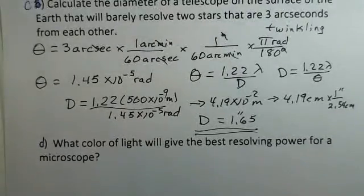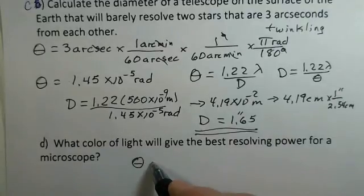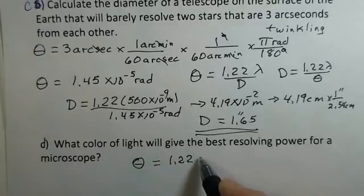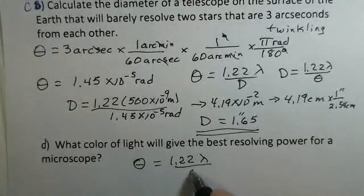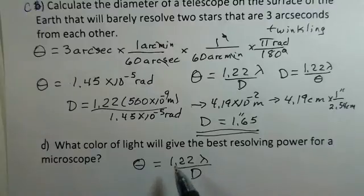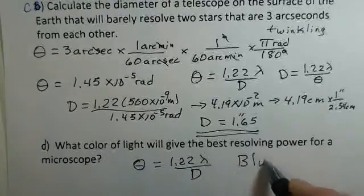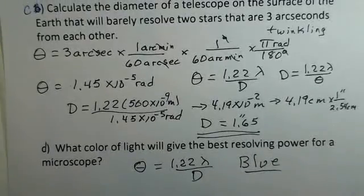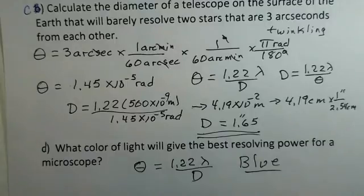Last question here. What color of light will give the best resolving power for a microscope? We want to get the smallest theta that we can in order to resolve small details. We have a fixed diameter for the microscope. What wavelength of light should we use? If we want a small theta, we need to use a small wavelength. That would be the blue end of the spectrum. Sometimes you'll see microscopes outfitted with a blue light to illuminate whatever is being examined. With the short wavelength light, you can see the details a little bit clearer if you use blue light rather than yellow or red light.